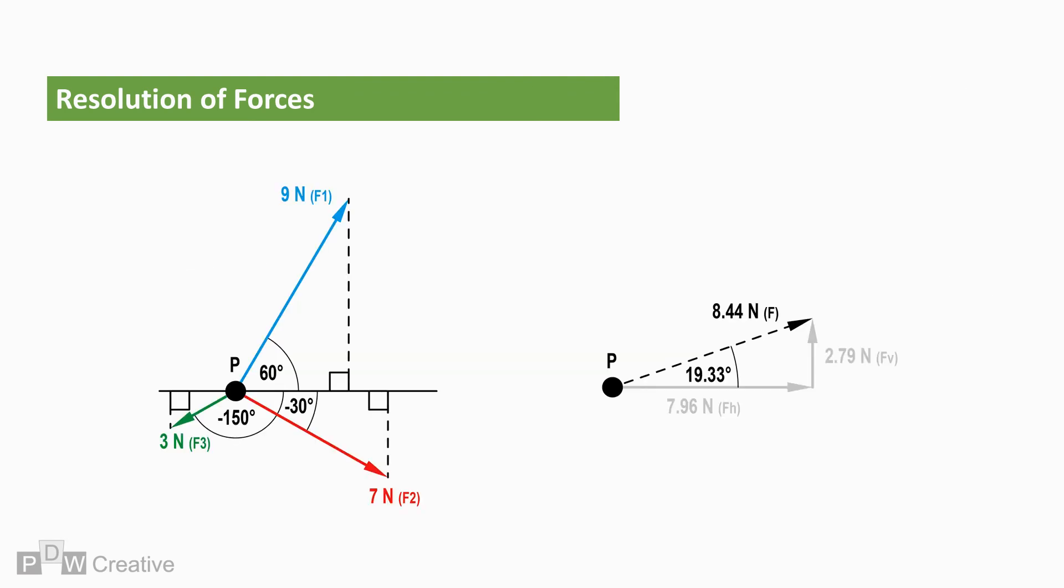The resultant force of F1, 2, and 3 is a force of 8.44 newtons acting at an angle of 19.33 degrees.